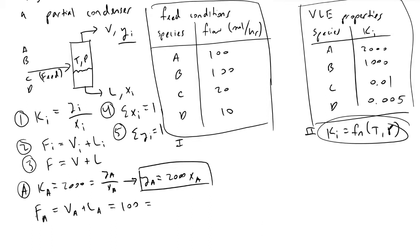This equals the total vapor flow rate V times y_a, the molar ratio of species A, plus the total liquid molar flow rate L times x_a. So 100 is equivalent to V times 2.0 x_a plus L times x_a.